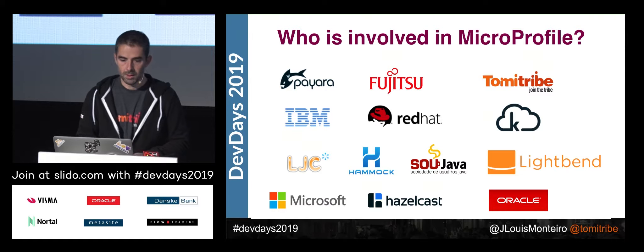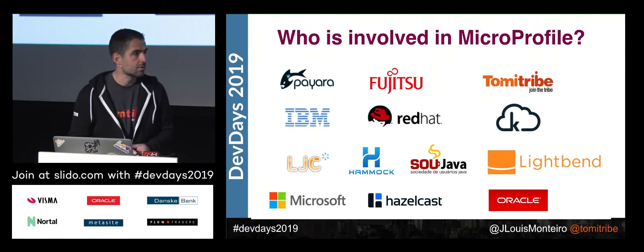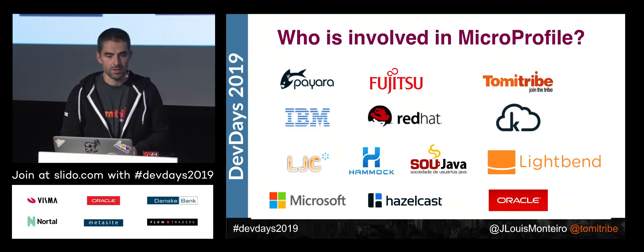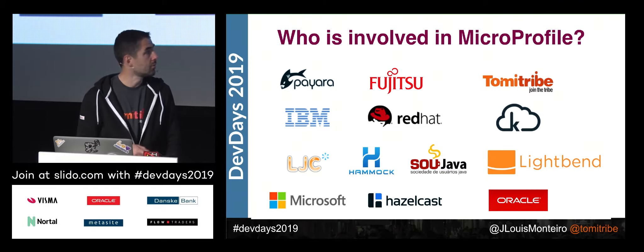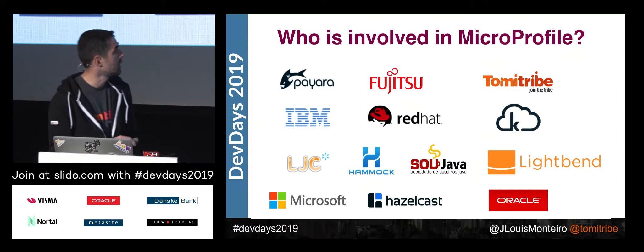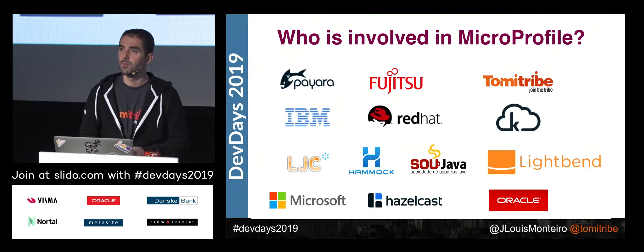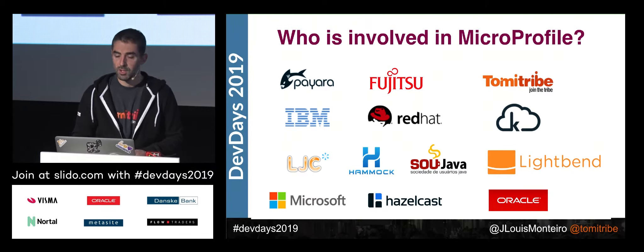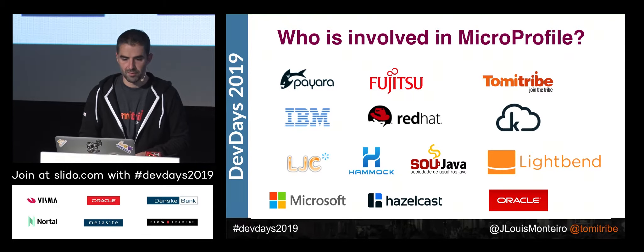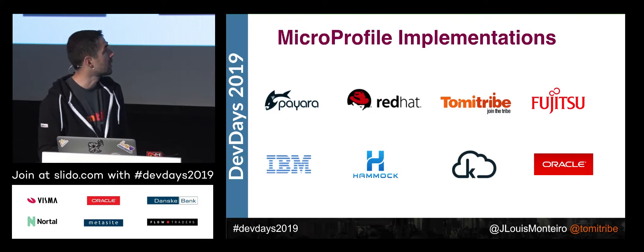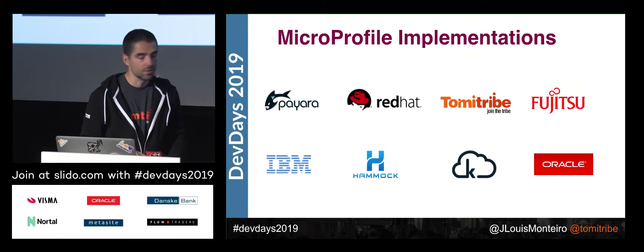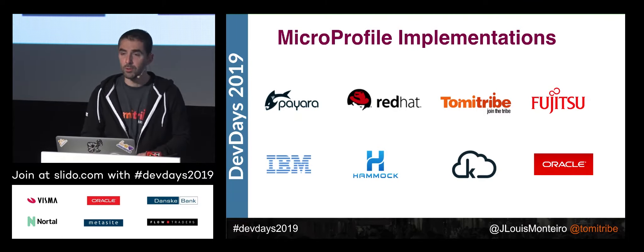In terms of the actors of MicroProfile, we've got the main big companies like Oracle, Microsoft, IBM, Fujitsu, Lightbend, etc. The good thing is we've also got the London Java User Group and some Brazilian Java User Groups, so we have communities involved, which is very healthy for the platform. In terms of implementations, we've got Oracle, Red Hat, and today we'll be using one where we are heavy contributors at TomItribe, which is on the Apache side.